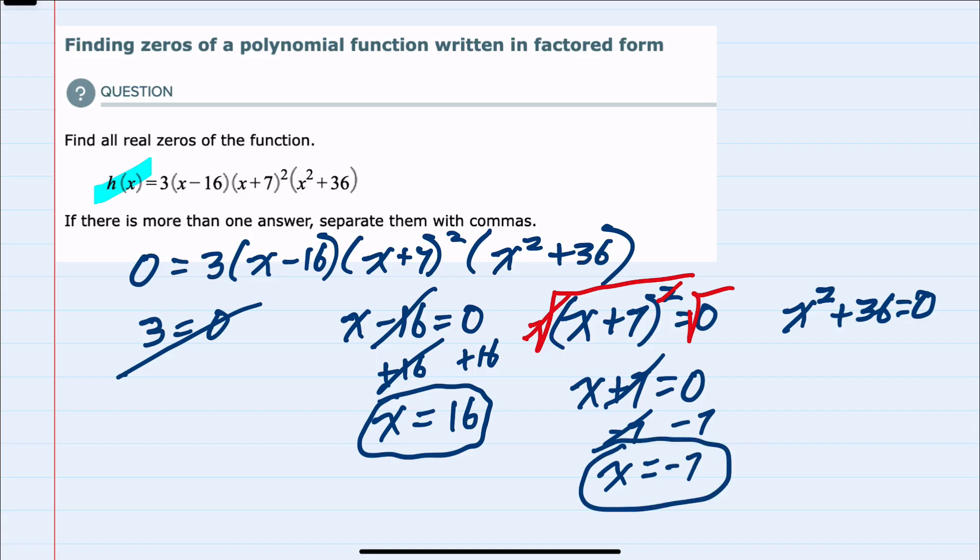For the last one, to solve that for x I would isolate the x by subtracting the 36 over, and I would have x² = -36. Since we are only looking for real zeros, there's no real value that I could square to have a negative 36. If I were to take the square root of both sides, I would have x equals the square root of a negative, which isn't going to be a real value.